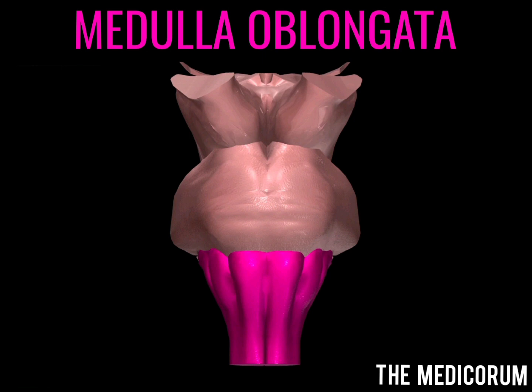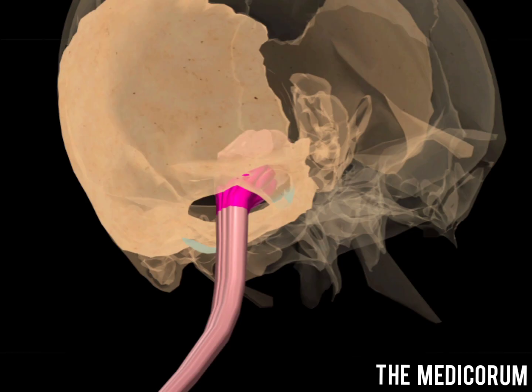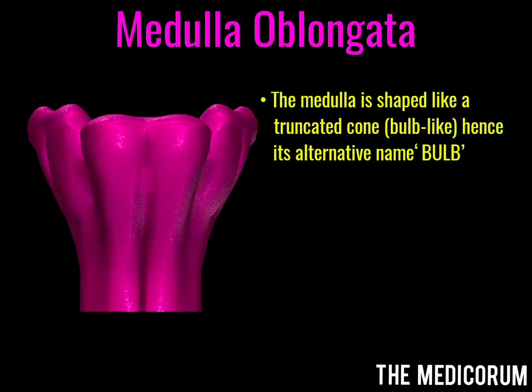Medulla oblongata is the direct upward continuation of the spinal cord. It extends from the foramen magnum to the lower border of the pons. As you can see in the diagram, the medulla is shaped like a truncated cone or bulb-like structure. Hence, its alternative name is 'bulb.'